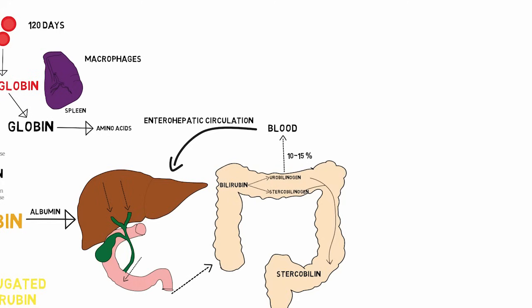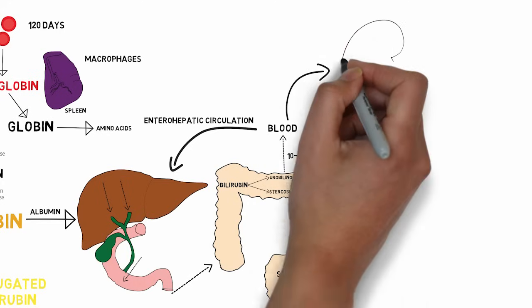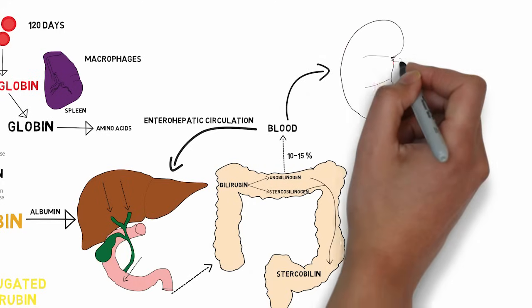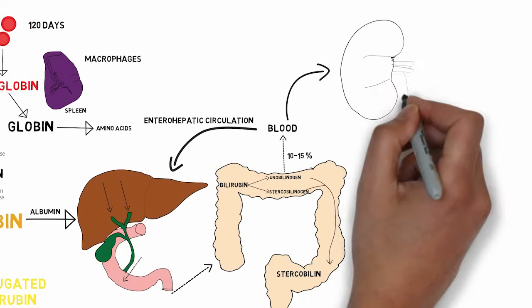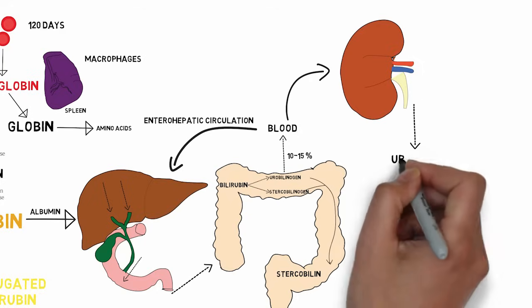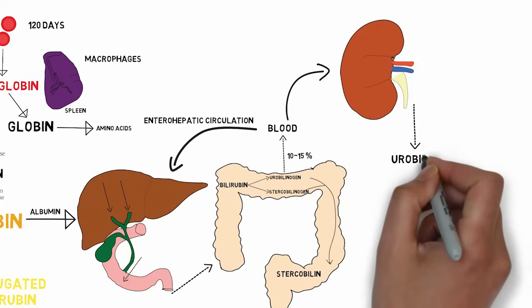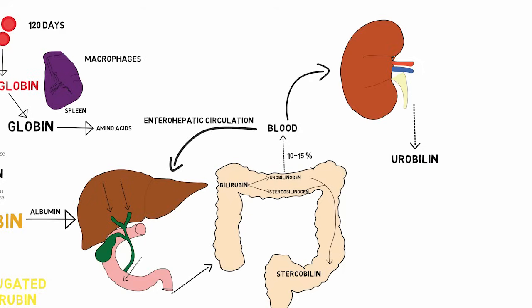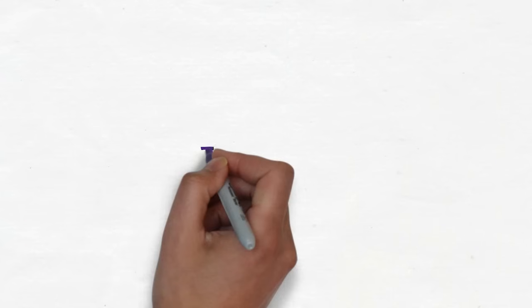A few percent of the reabsorbed compounds reach the kidney and are excreted in the urine in the form of urobilin. This was a brief overview of bilirubin metabolism.